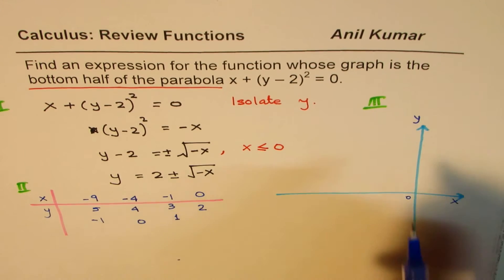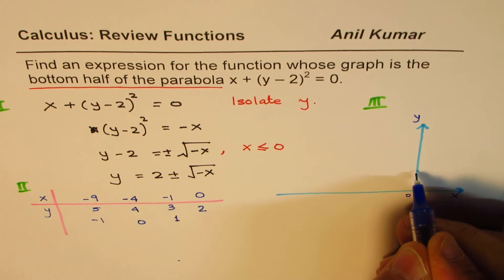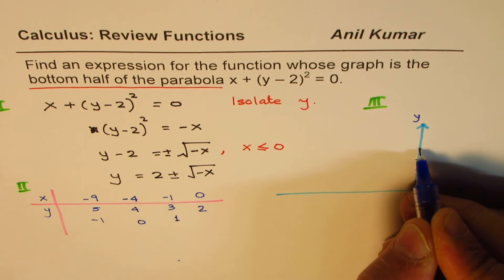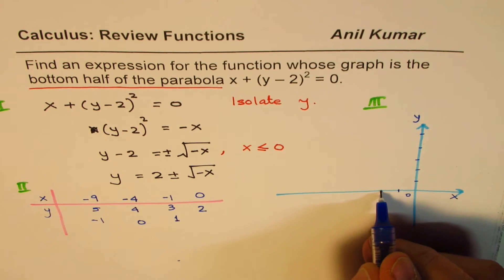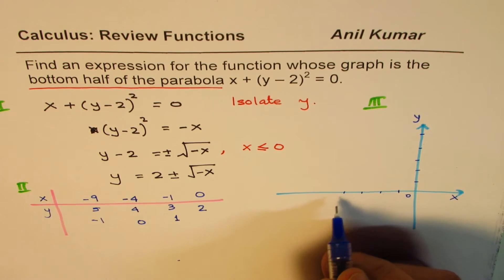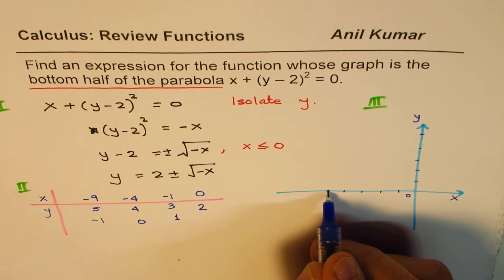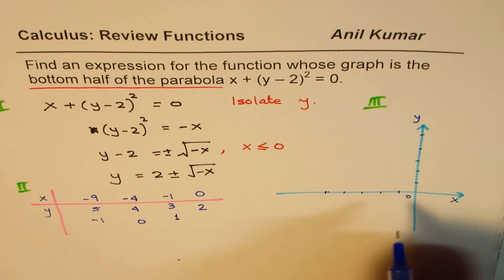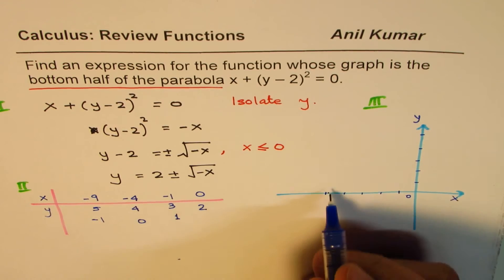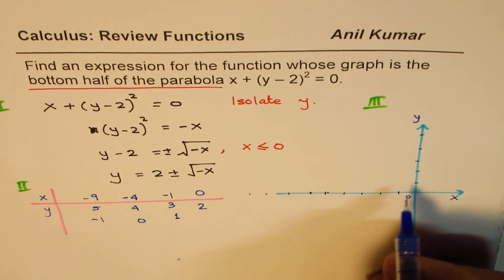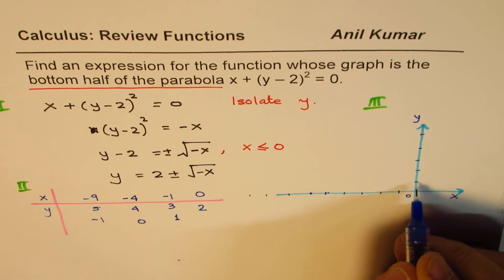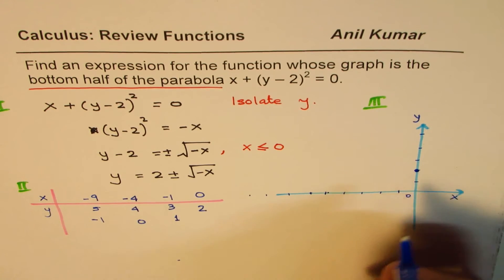At x = 0, the value is 2. So let's say this is 1, this is 2, 3, 4, and 5. And here we have -1, -2, -3, -4, and -5. At 0, we have 2, just one point.